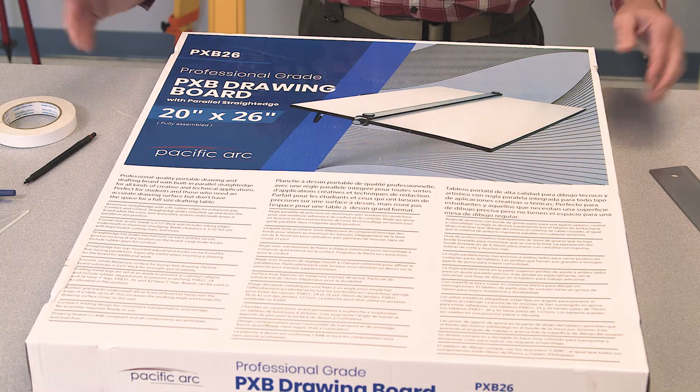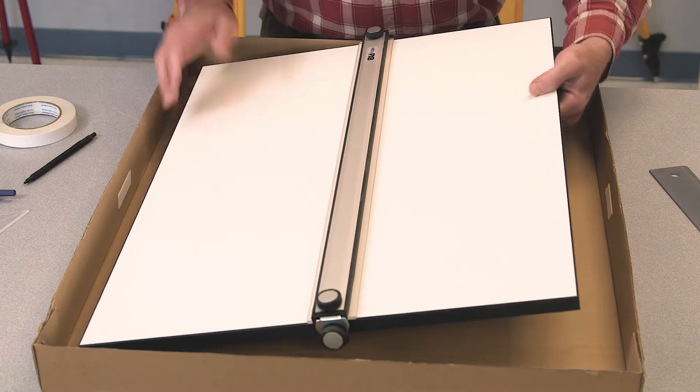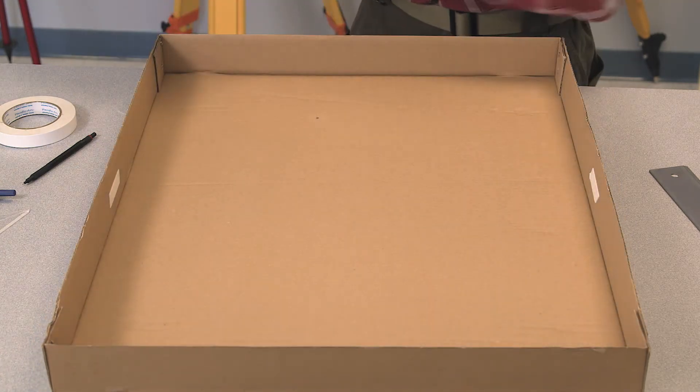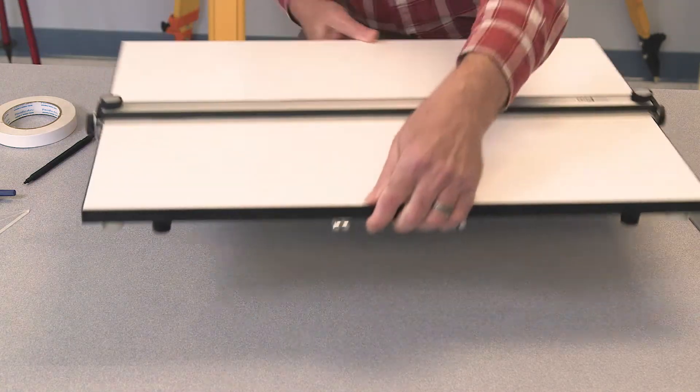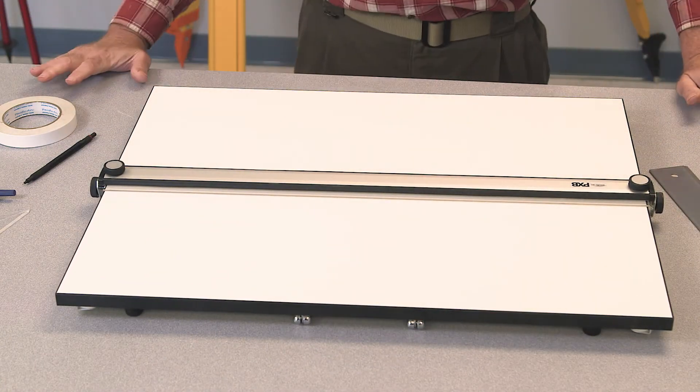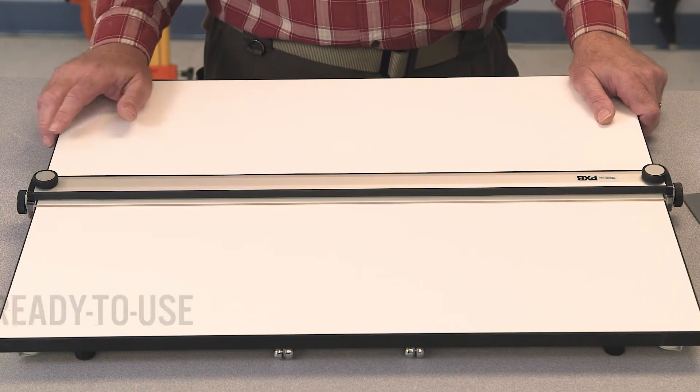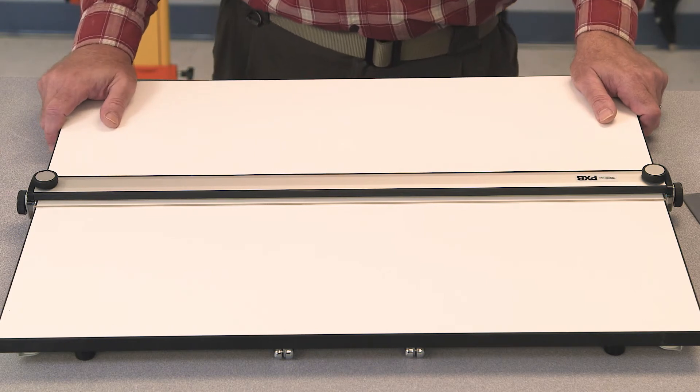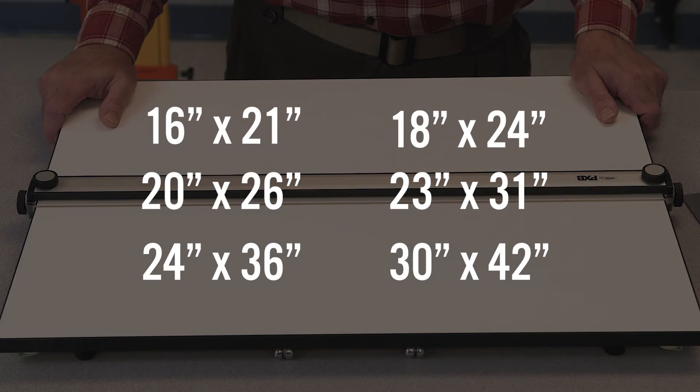First we'll unbox and set up the board. It comes ready to use. No assembly is required. This is a 20 by 26 inch version of the PXB. Other sizes are available too.